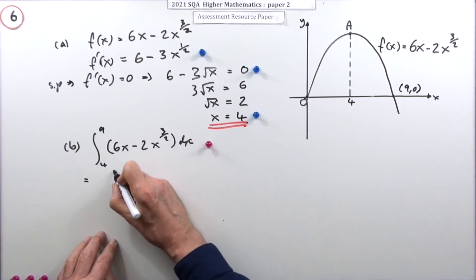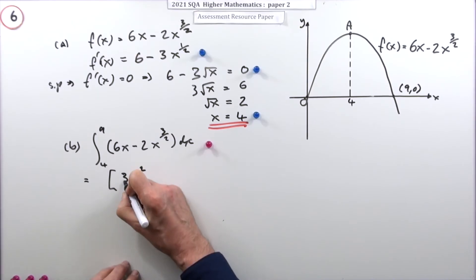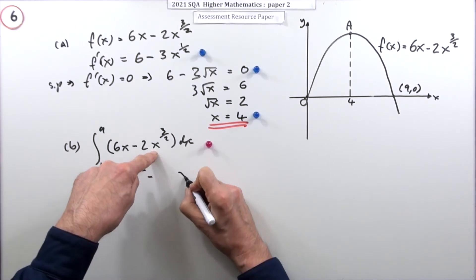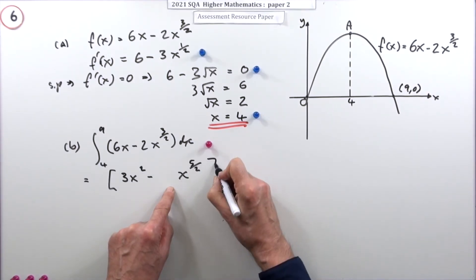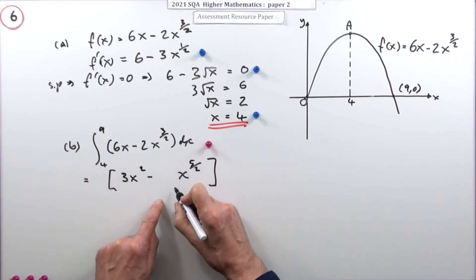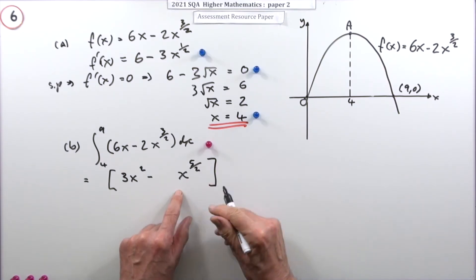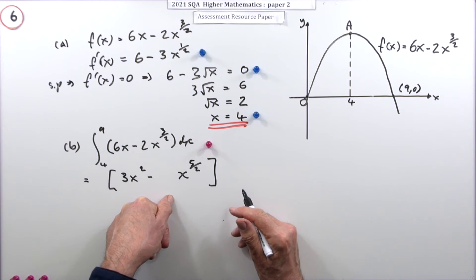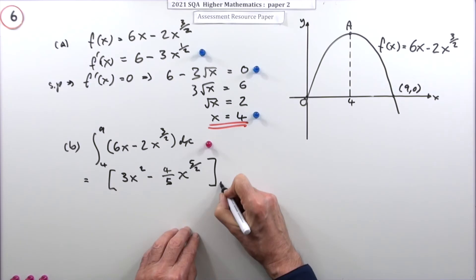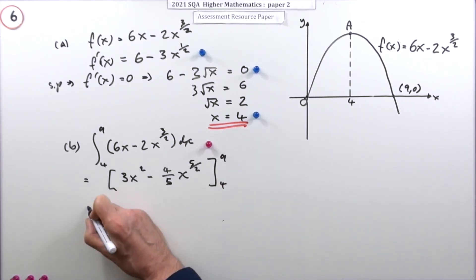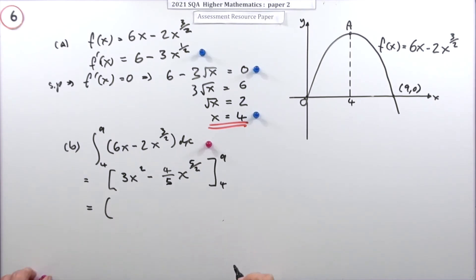Now integrate. For 6x: add 1 to the power to get x², divide by 2, giving 3x². For 2x^(3/2): add 1 to the power to get 5/2, then divide by 5/2, which is the same as multiplying by 2/5. Since there's already a 2 in front, that becomes 4/5. So the integrated expression is 3x² minus (4/5)x^(5/2), evaluated from 4 to 9.